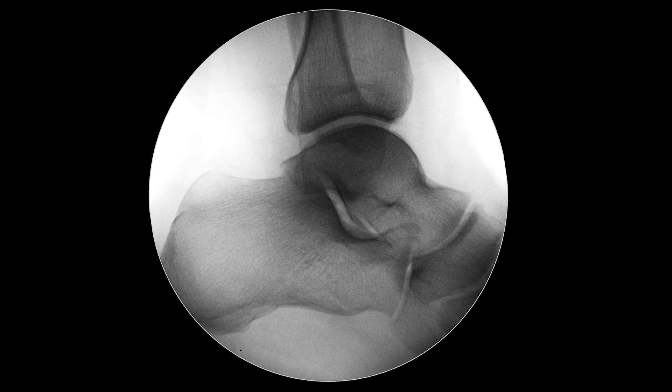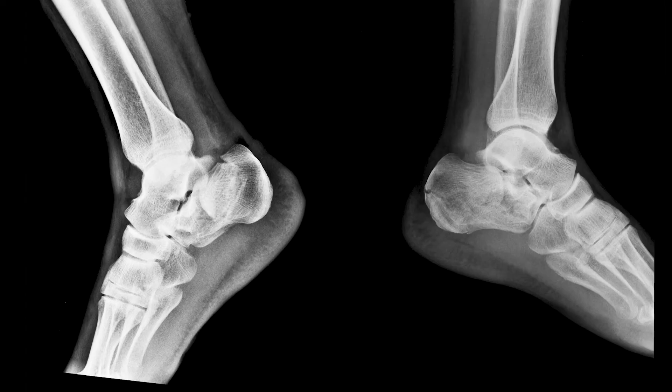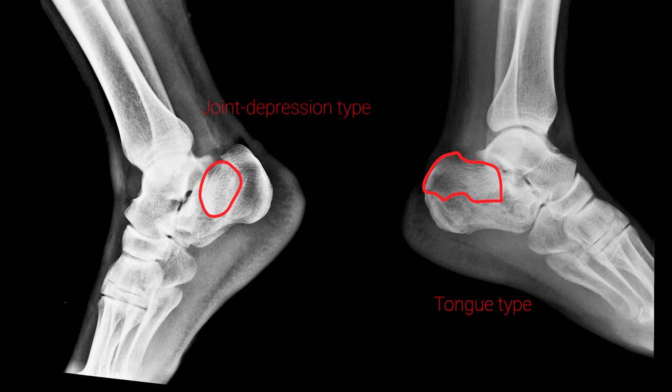Double density sign: at the standard lateral view, the posterior articular facet is presented by a single curved line. In cases of intra-articular fractures, we can observe a double or rarely triple contour of the posterior facet. Using the lateral view, we can also classify calcaneal fractures according to the Essex-Lopresti classification, dividing all fractures into tongue type and joint depression type.